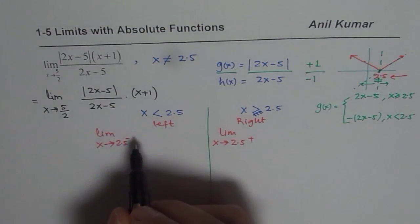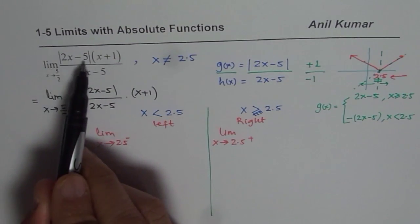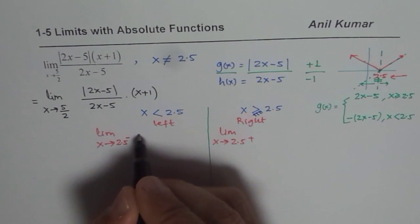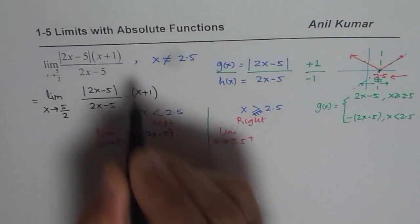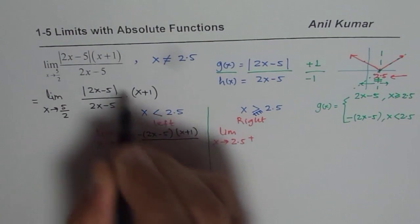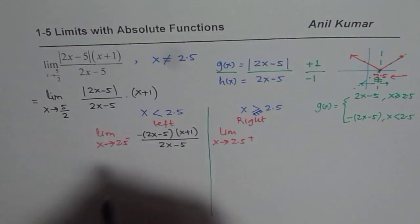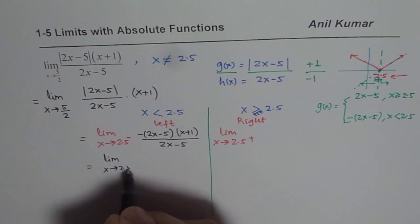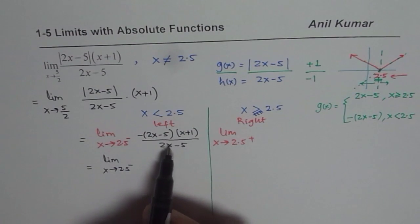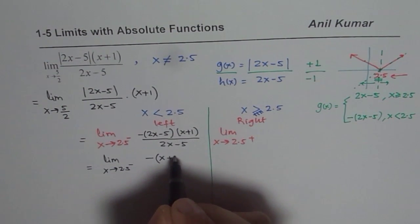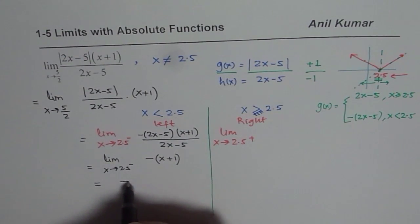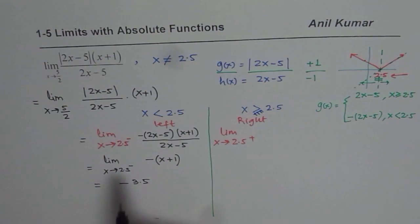We will now rewrite our function and find the limit from both sides. From the left side, since we are on the region where x is less than 2.5, the absolute value of 2x minus 5 is written as minus of 2x minus 5. So we have the limit as x approaches 2.5 from the negative side of: minus (2x minus 5) times (x plus 1), divided by (2x minus 5). The two factors of 2x minus 5 cancel, leaving negative of x plus 1. Substituting 2.5 gives us negative 3.5 as our left-side limit.